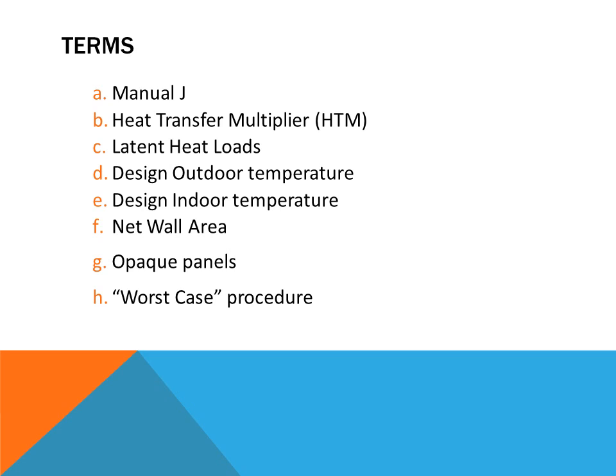Some of the terms we're going to discuss are: Manual J, heat transfer multiplier, latent heat loads, design outdoor temperature, design indoor temperature, net wall area, opaque panels, and worst case procedures.